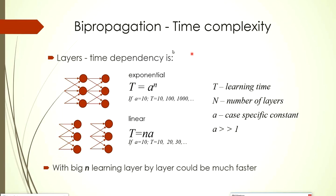Regarding time complexity: with many layers together, each layer contributes exponentially longer learning time — for example, with a value of 10 per layer, one layer takes 10 time units, two layers 100, three layers 1,000. With separate layer learning, each layer always takes 10 units, so one layer is 10, two layers 20, three layers 30 — linear complexity. With a large number of layers, learning is much faster.